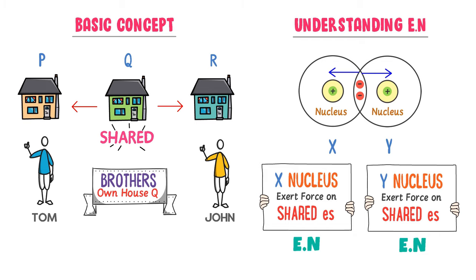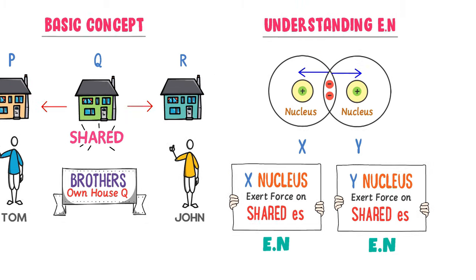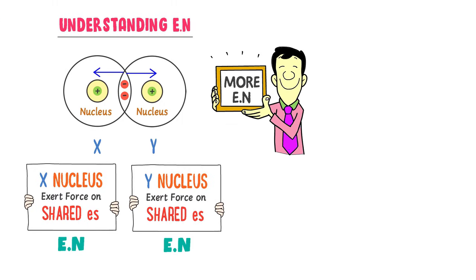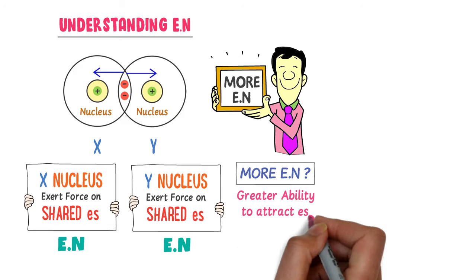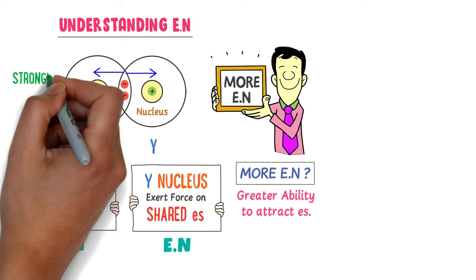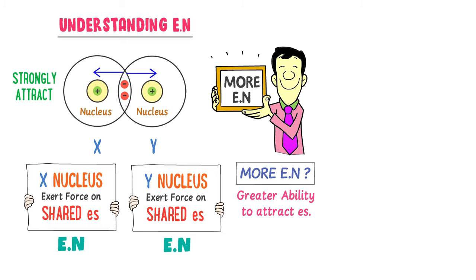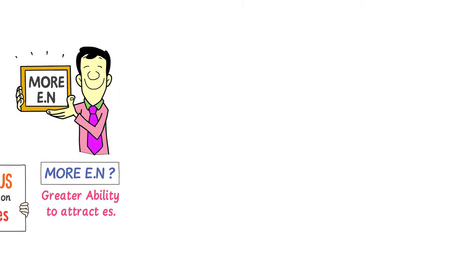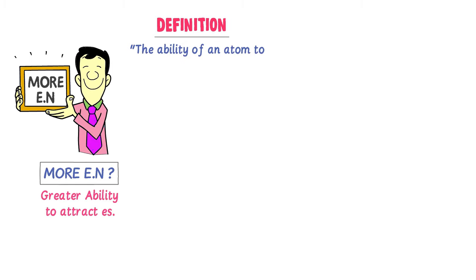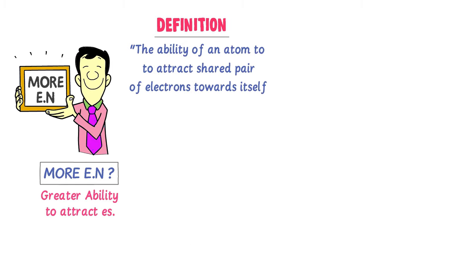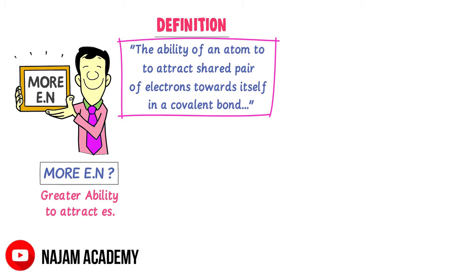Thus, electronegativity is the power of any atom to attract the shared pair of electrons. Now, which atom — X or Y — is more electronegative? More electronegative means that an atom has a greater ability to attract the shared pair of electrons. Let X atom strongly attract the shared pair of electrons more than Y atom, so X atom is more electronegative and Y atom is less electronegative. Therefore, we define electronegativity as the ability of an atom to attract the shared pair of electrons towards itself in a covalent bond.